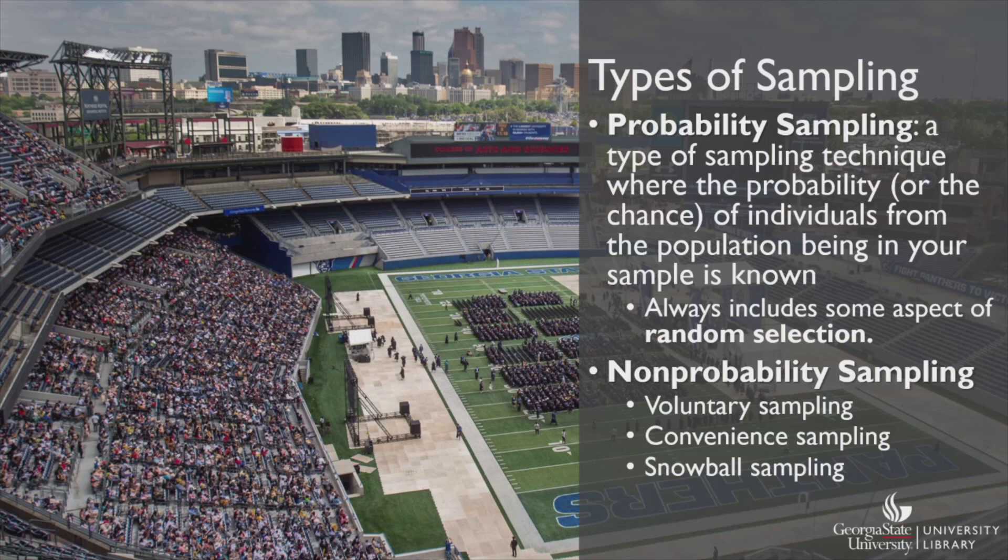Random selection can be difficult to do in real-world research, especially when the subjects of the sample are people. In those situations, non-probability sampling techniques are used. This can include voluntary sampling, which is probably our best choice for the graduation study. We could hand out a survey with the graduation programs and ask the guests to fill them out and drop them in a box while they are on their way out. However, voluntary sampling does have its downfalls, which we'll talk about in just a moment.